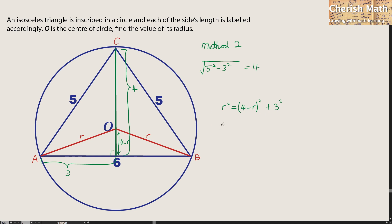let me expand the thing here. R squared is equal 16 minus 8R plus R squared plus 9. R squared, I can drop it here.